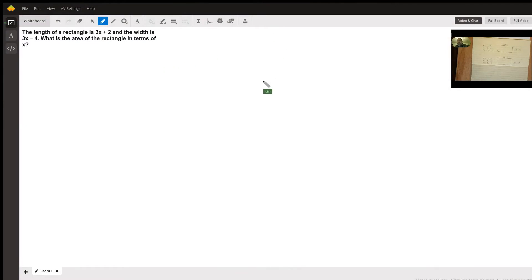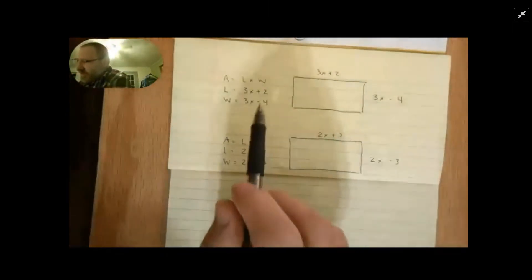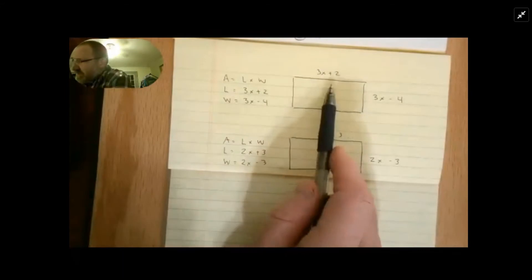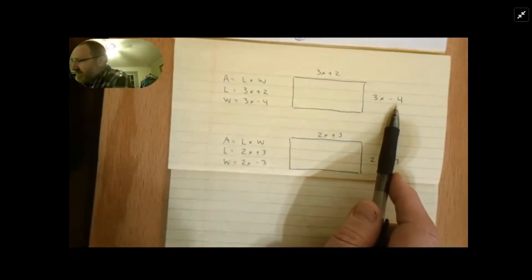Good morning. We have a problem this morning and let's go ahead and make the screen bigger so we can see it. The student says that I have a rectangle whose length is 3x plus 2 and their width is 3x minus 4.